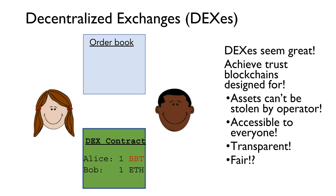This seems great. It can achieve the trust and exchange blockchains are designed for, prevent assets from being stolen by any operator by requiring all swaps to be atomic or all or nothing. It's accessible to everyone because no permissioned access control is required on who can see orders or post data to the blockchain. It's transparent because everyone can see what orders are executed. But is it fair?